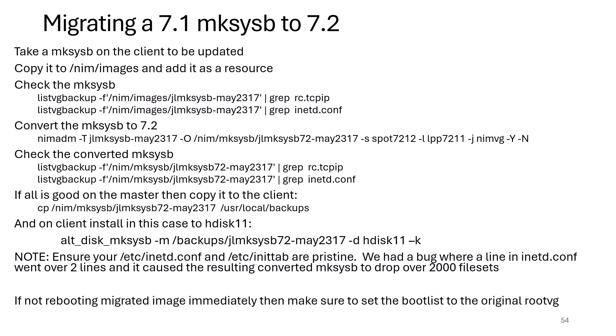One problem encountered when migrating a 7.1 mksysb to 7.2 using nimadm: a typo in inetd.conf where a line got split over two lines caused the resulting mksysb to drop over 2,000 filesets, making it unbootable. Always check /etc/inittab and inetd.conf to make sure they're pristine and clean — any errors will impact your converted mksysb or migration. Also remember that nimadm sets the boot list, so if you're not rebooting immediately, set the boot list back to the original rootvg.